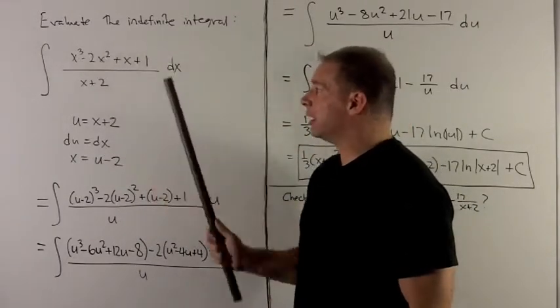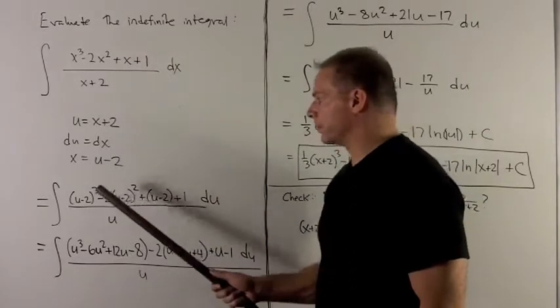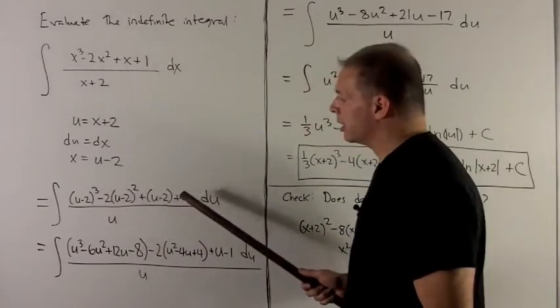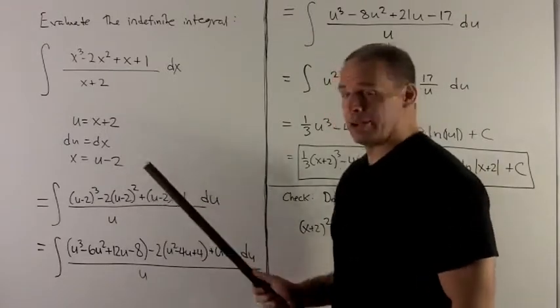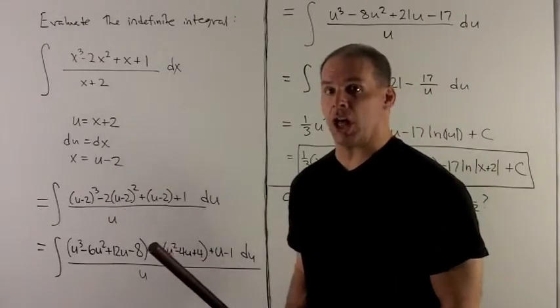Wherever I see an x on top, I'm going to put a u minus 2. It's going to give me this all over u. It's kind of a mess, but it will be manageable, and you won't have to do any long division at all.